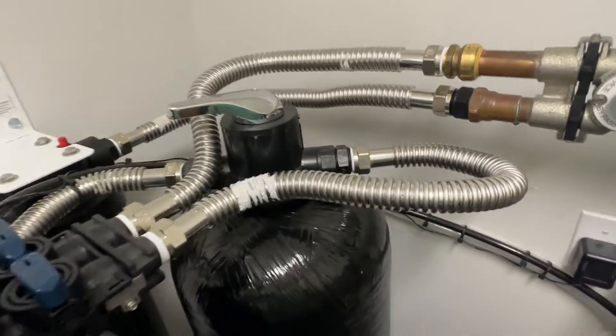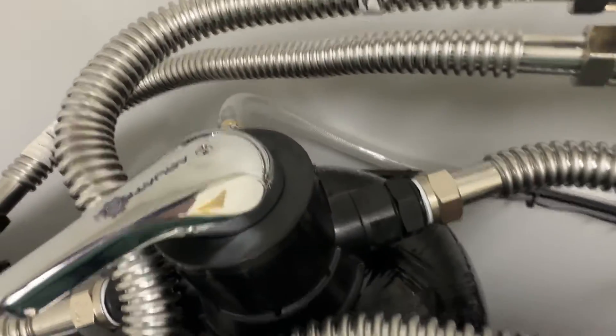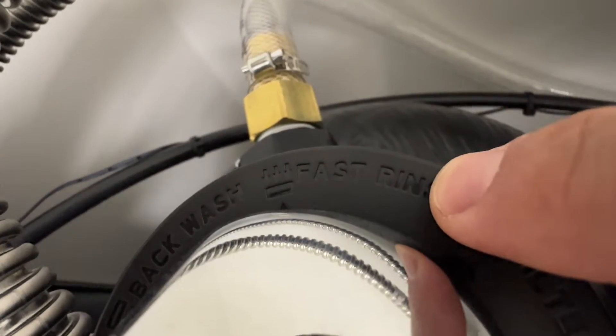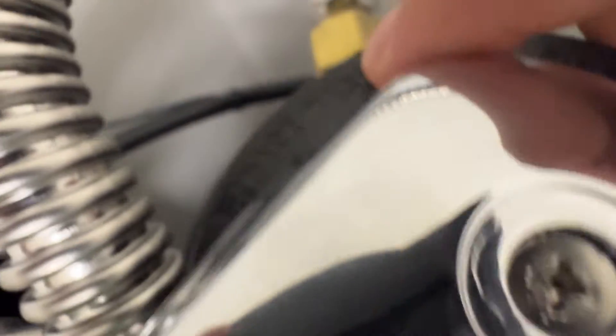Next thing you want to do is read the labels for your rinse lever. The label all the way on this side says filter, that's what it's on right now and that's where it should be for normal usage. Label in the middle says fast rinse and then you've got backwash all the way on the left.